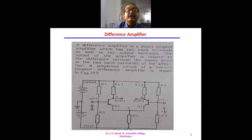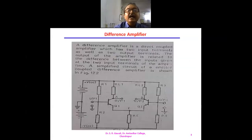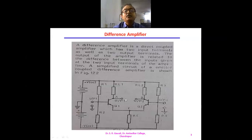There is a double-ended output, and that output is taken between point A and point B. At output terminal A and output terminal B, if we take the outputs, we get a double-ended output.